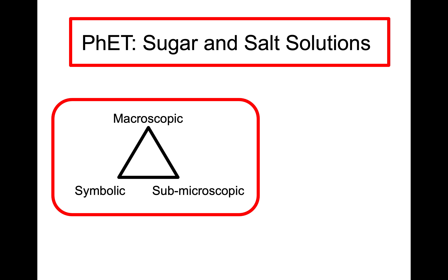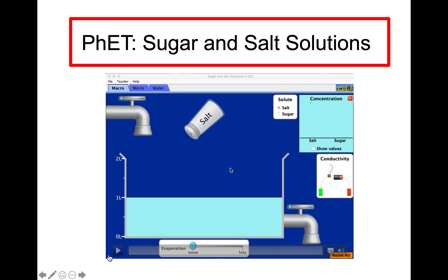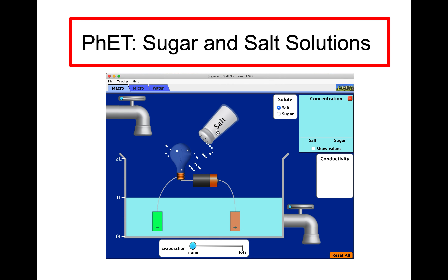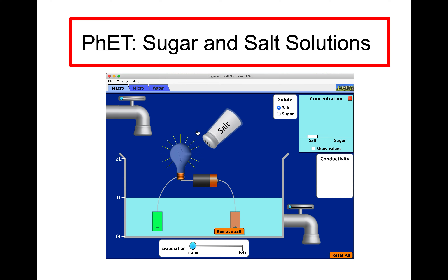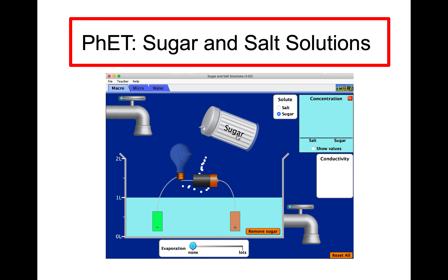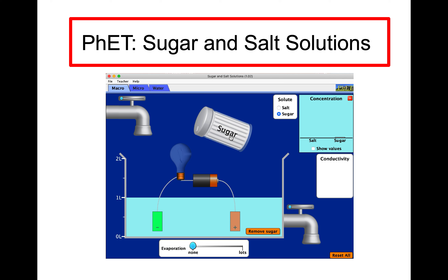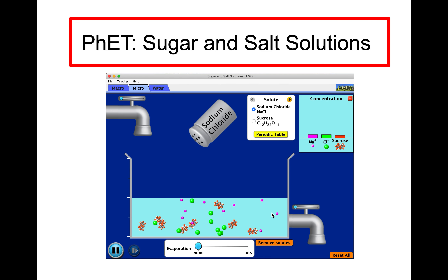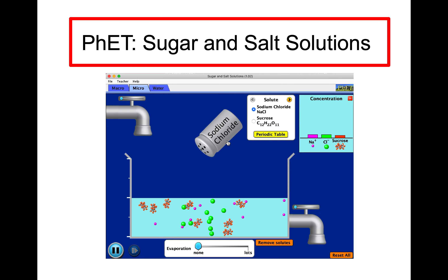I've definitely used this sugar and salt solution sim. Within that simulation, macroscopically one could measure conductivity — if you're adding salt to water, contrast that with adding sugar. Notice that's within the macroscopic tab. There's also a microscopic tab that's showing what's taking place at the particle level. I used this back in Chapter 4 when discussing strong, weak, and non-electrolytes.